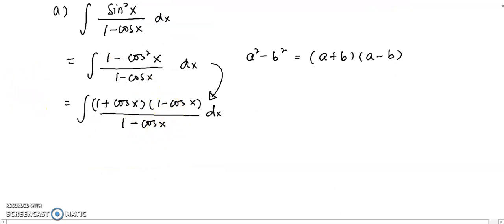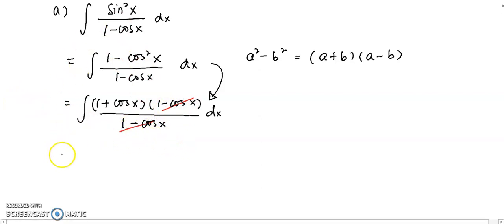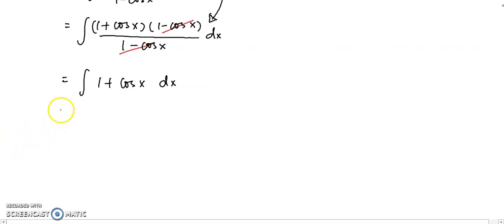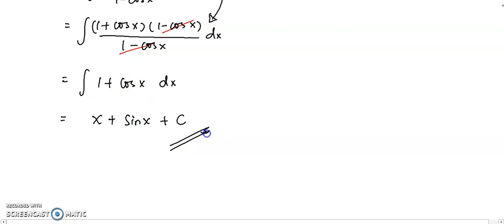After factorizing, you can clearly see that the 1 minus cos x cancels out. What you're left with is just integrating 1 plus cos x. Integrating term by term: integrate 1 with respect to x gives x, and integrate cos x gives positive sin x, plus constant c. That's it.